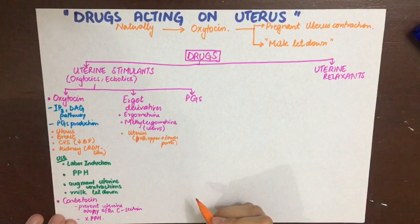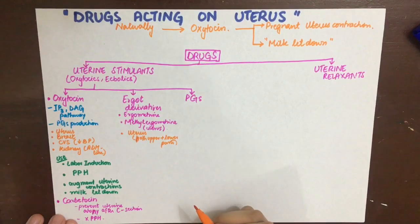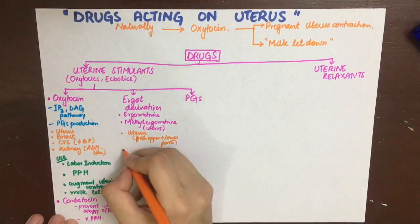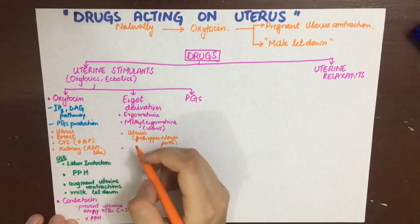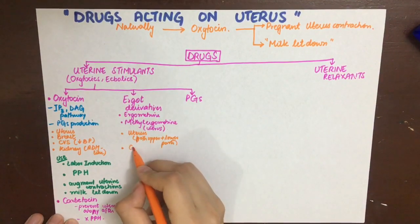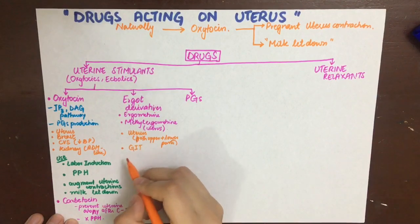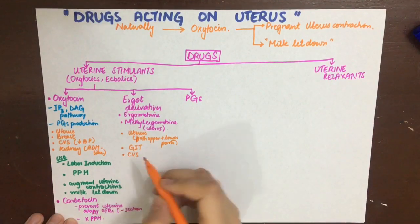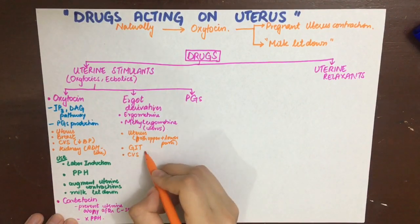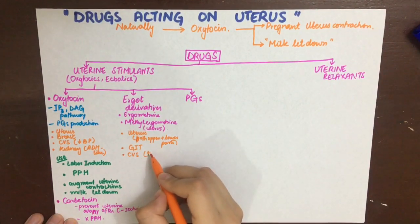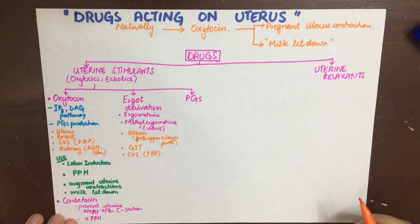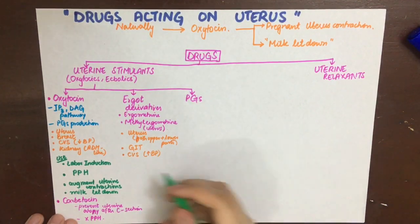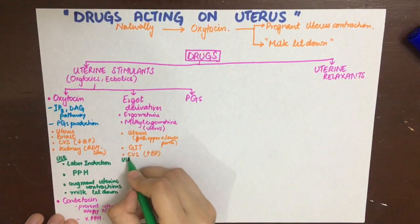At low doses ergot derivatives are acceptable, but at high doses they cause uterine tetany. In the GI tract they cause peristalsis, and in the cardiovascular system they cause vasoconstriction and increased blood pressure, though at therapeutic doses this is not very significant.